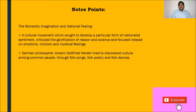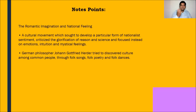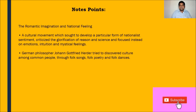Notes points for romantic imagination and national feelings: the cultural movement sought to develop a particular form of national sentiments and criticized the glorification of reason and science, focusing instead on emotions, intuitions, and mystical feelings. German philosopher Johann Gottfried Herder studied the common people and collected their cultural identities — folk songs, folk poetry, and folk dances. Romantic imagination and national feelings were created by making people aware they all belong to one particular culture, through their traditional institutions, mystical feelings, and traditional dances which common people perform in different situations.